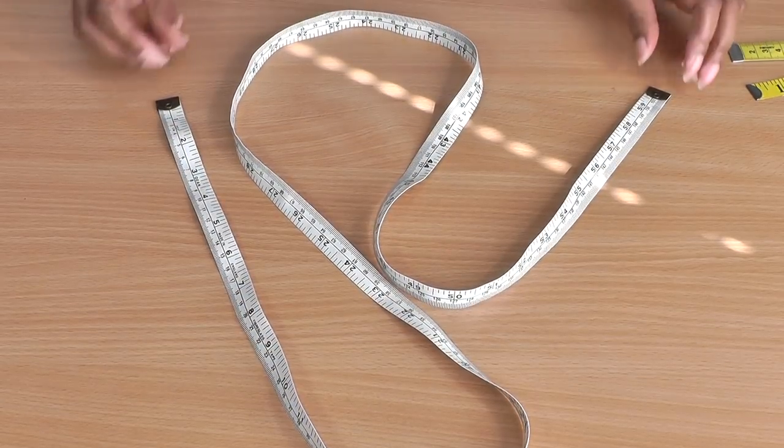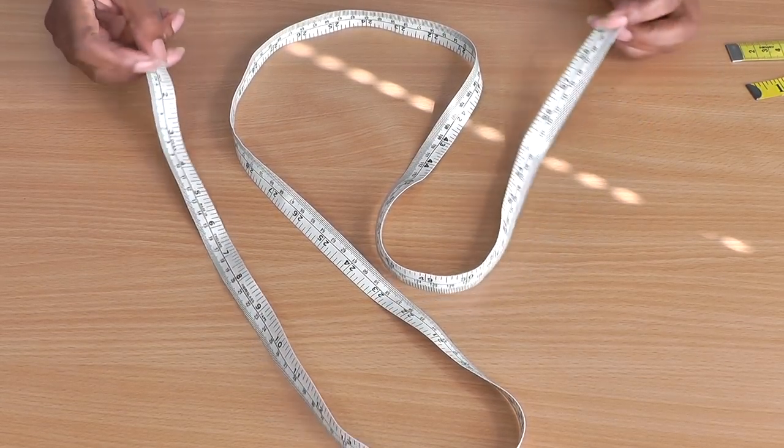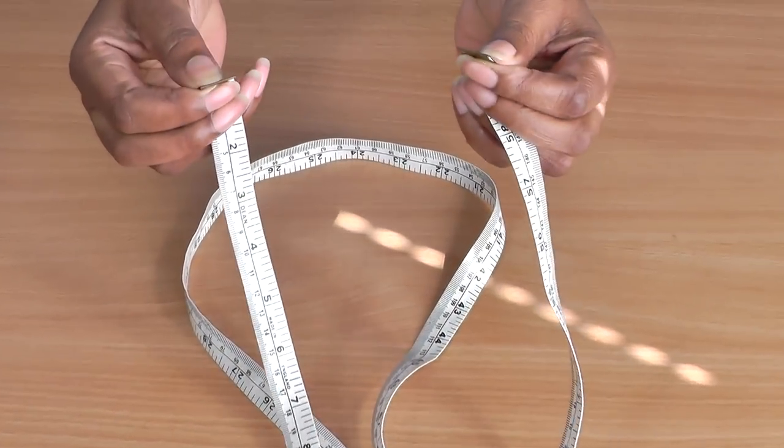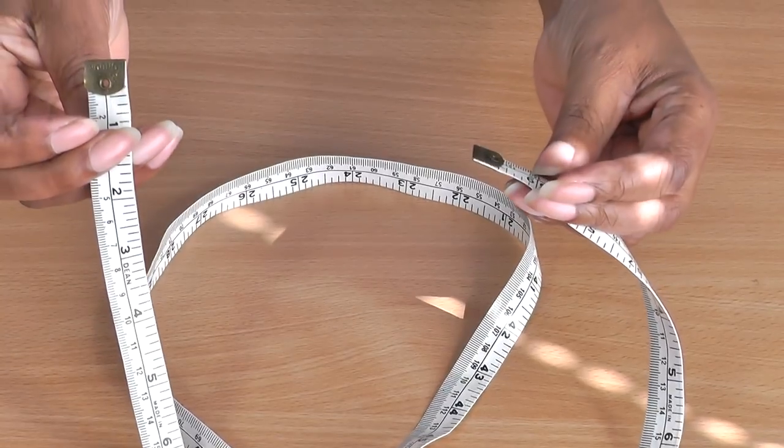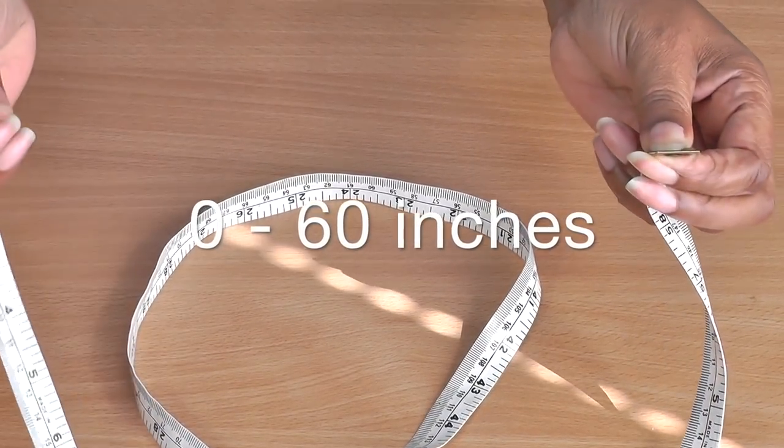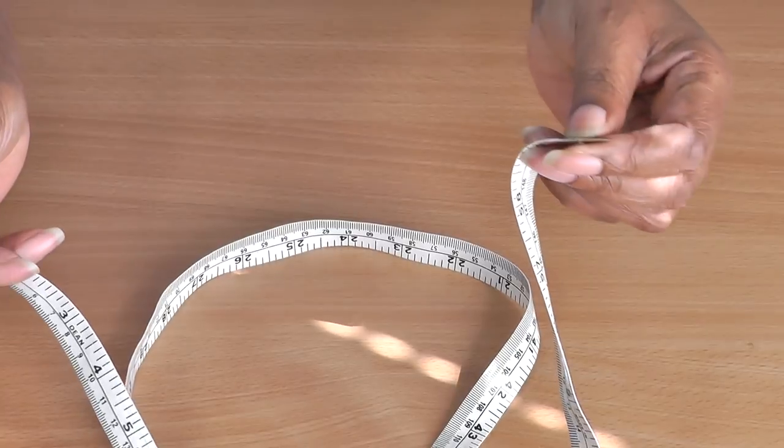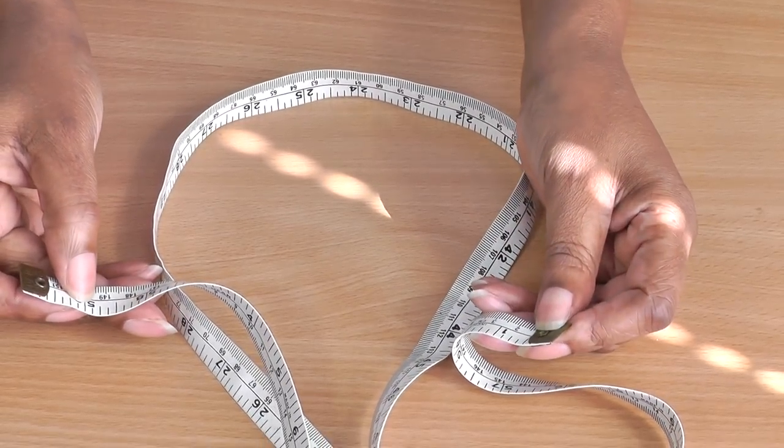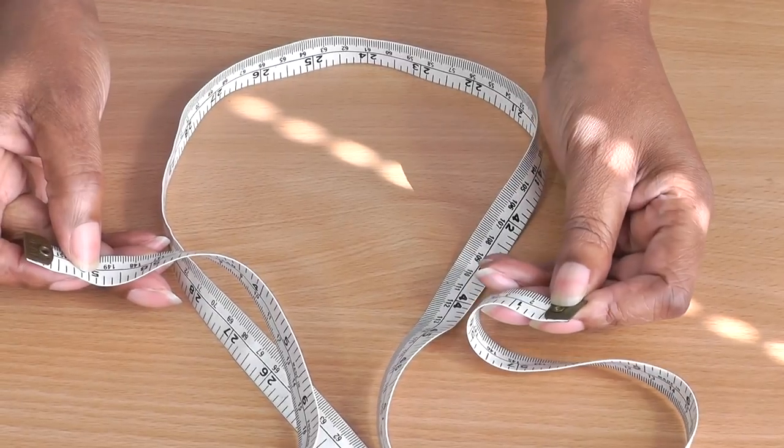All that a tape measure is, is a flexible ruler and it has tabs on each end which are metal. If you're dealing in inches, it goes from one to 60 inches, and then if you're dealing with centimeters, it goes from zero to 150 centimeters.